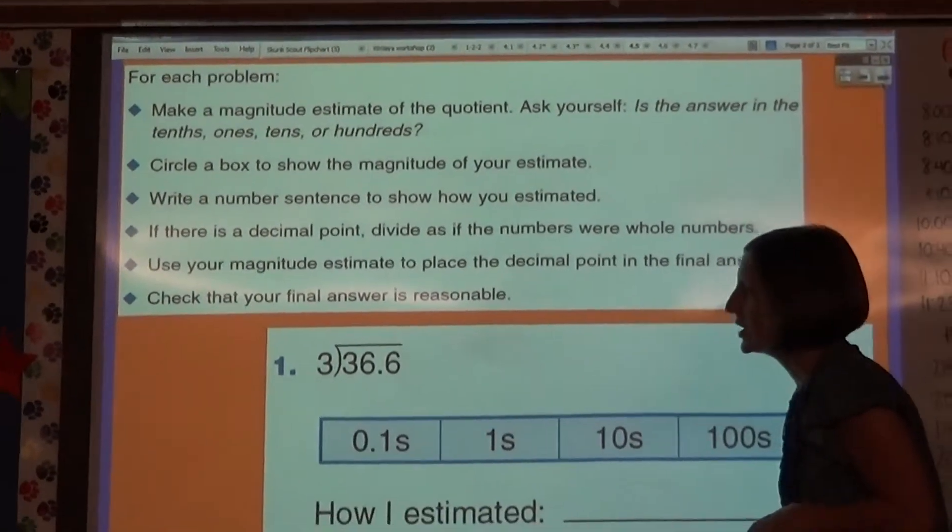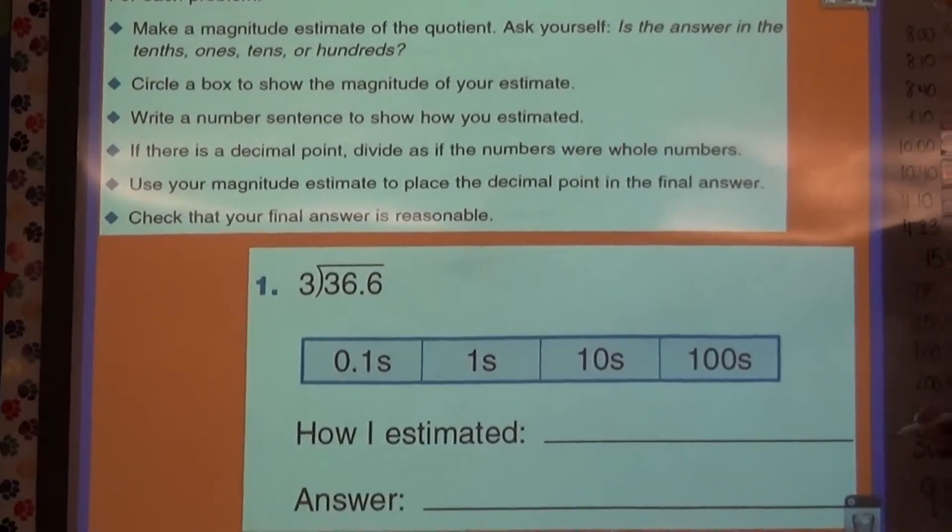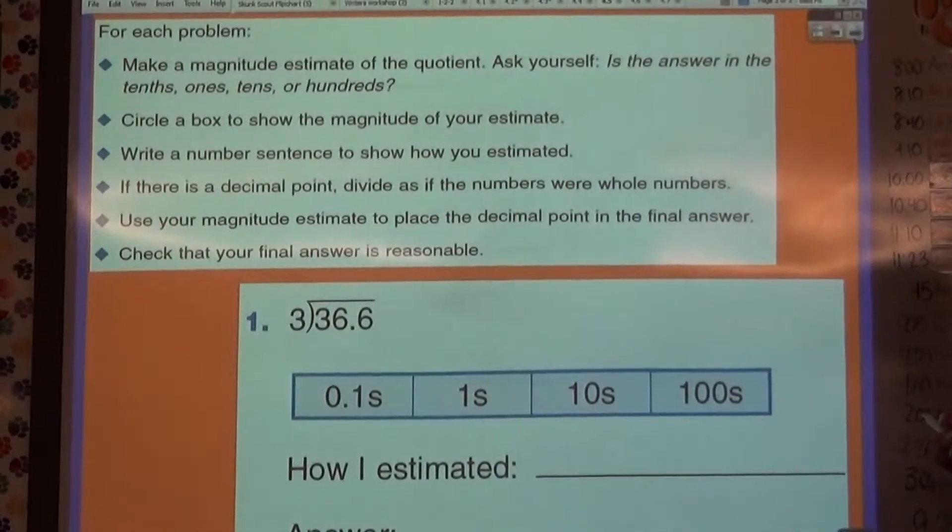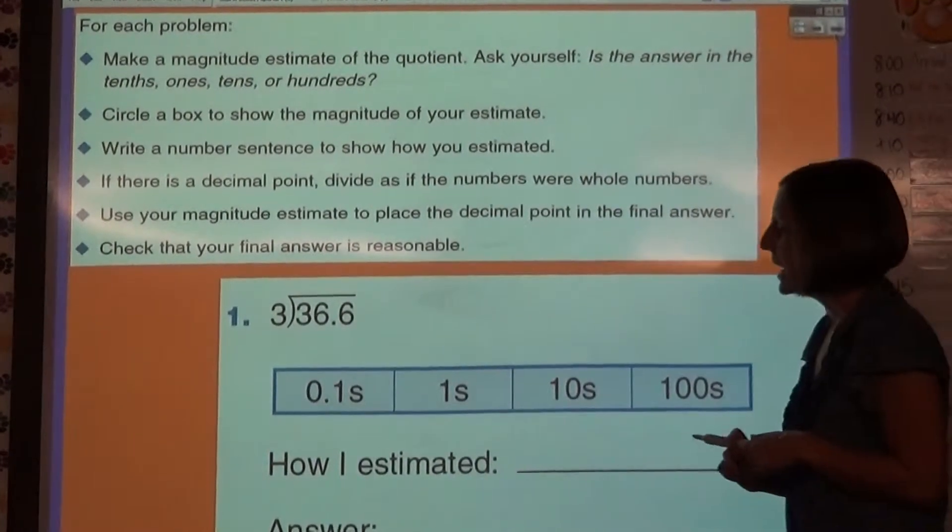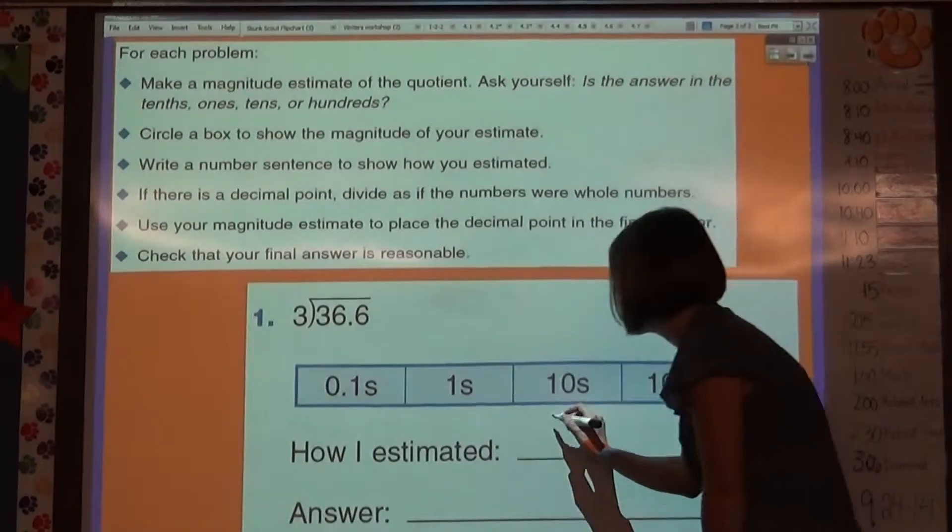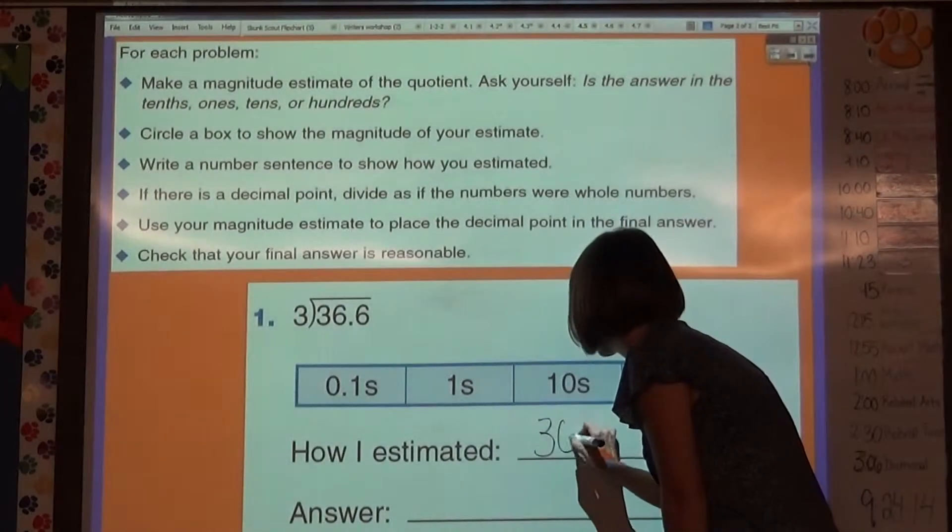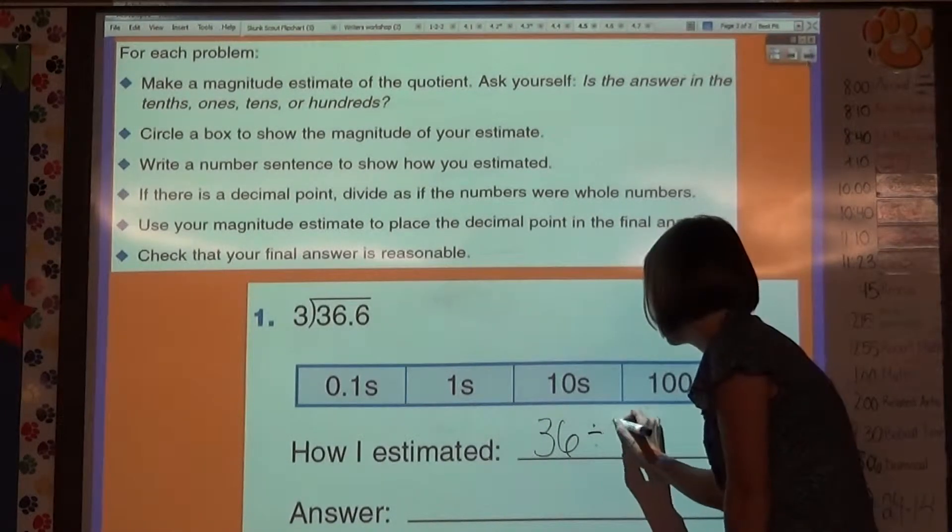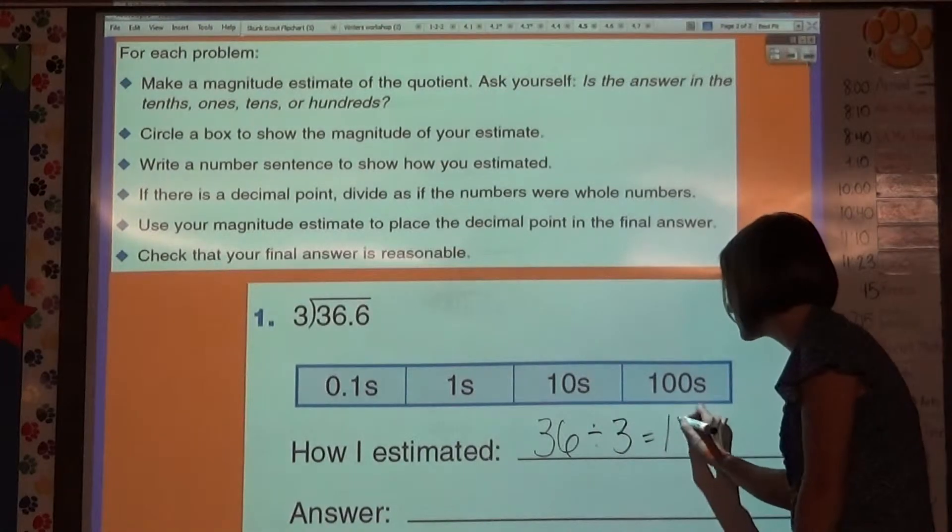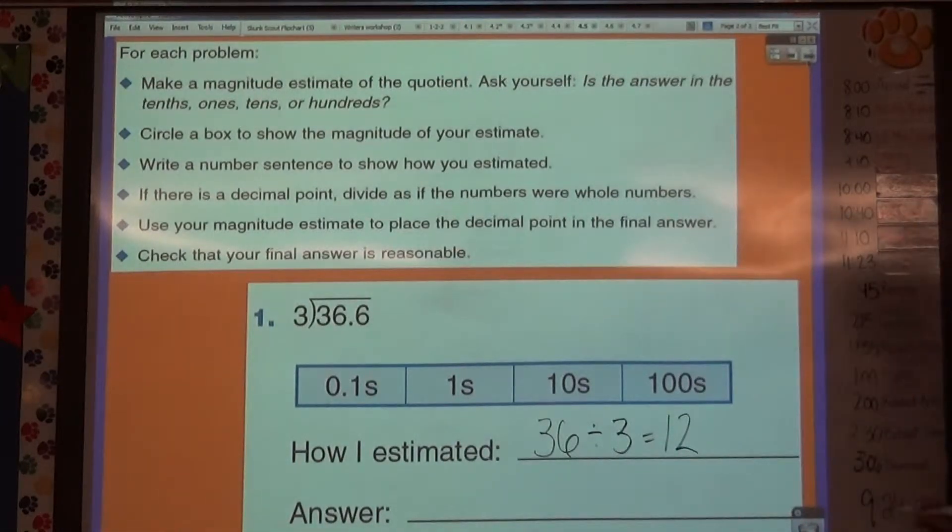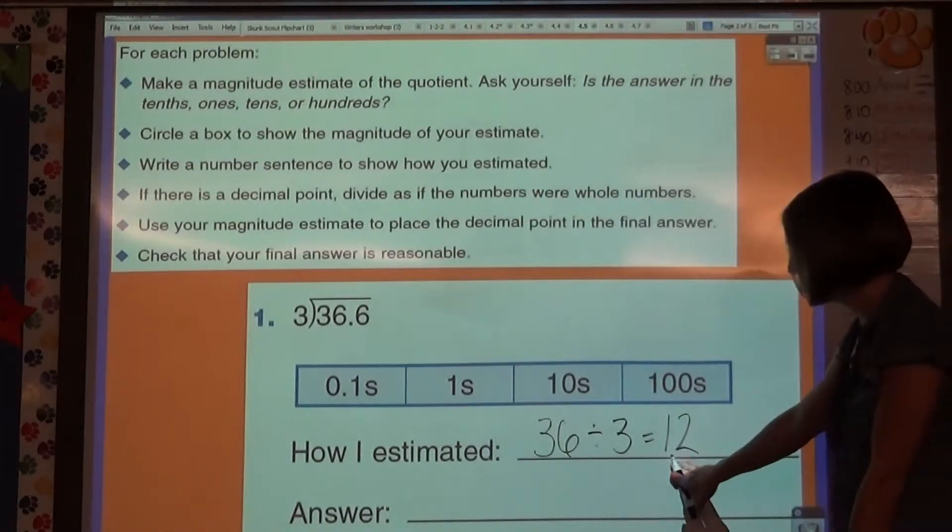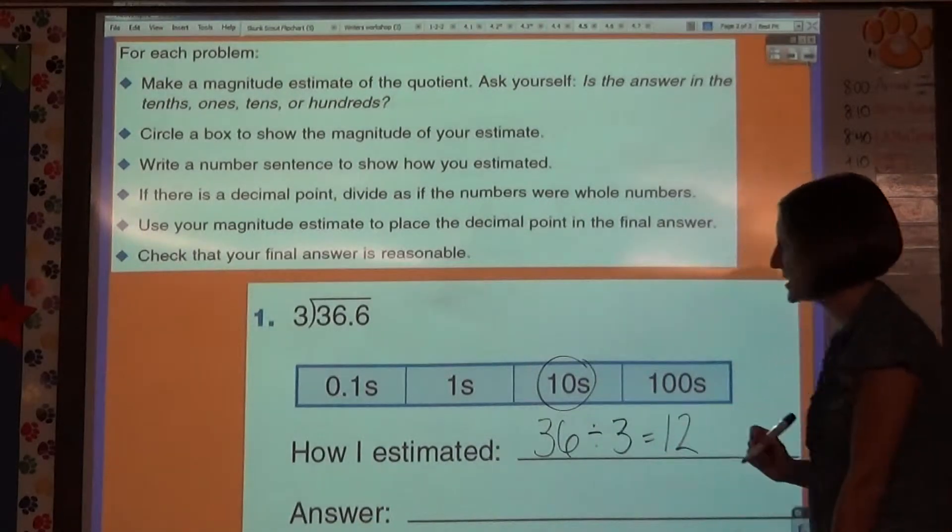If we take a look at problem number 1 in your math journal, 36.6 divided by 3. If I were to estimate, I know that 36 divided by 3 equals 12. So I would write down how I estimated, and then 12 is in the tens place.